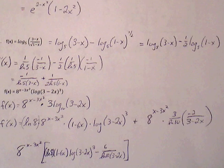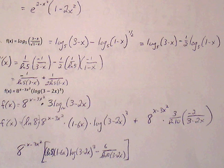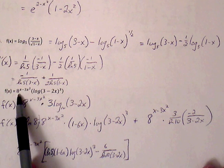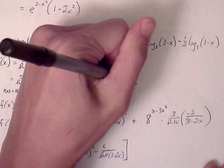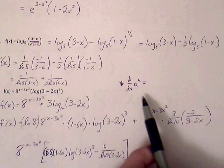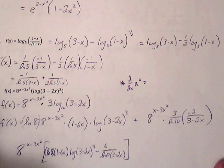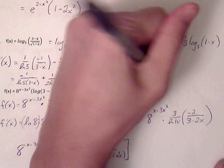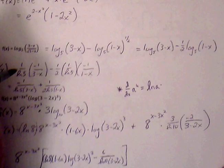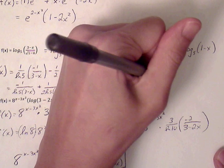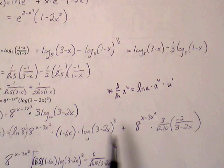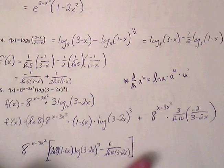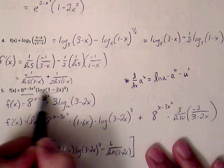Number 5: f of x equals 8 to the x minus 3x squared, times log of 3 minus 2x quantity cubed. We have a special rule for base a: a to the u. The rule for a to the u is similar to e to the u, but we account for the fact that this is not base e by including natural log of a, times the original function times the derivative of the exponent. Notice these are two separate terms being multiplied, so we go through product rule.